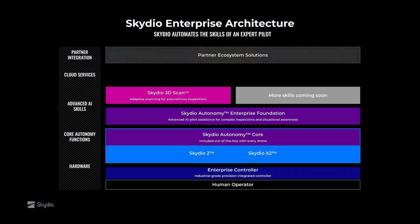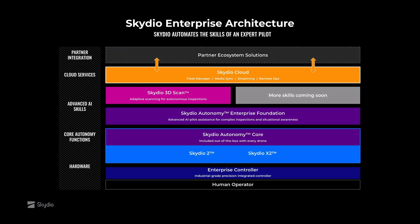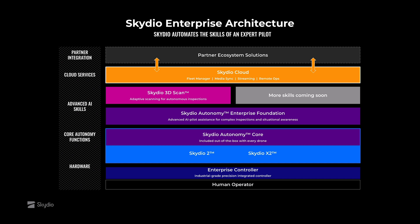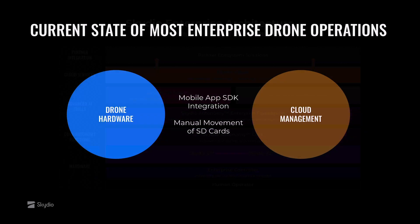Skydio Cloud is the new core component of the Skydio enterprise architecture, which unlocks powerful cloud services for connected flight operations. It's born from an observation that the current state of enterprise drone operations shows a largely divided world, with hardware manufacturers on one side and cloud management providers on the other. We're forced to rely on mobile app integrations or to manually shuttle SD cards around in order to move data from a vehicle to a place where it can be used by your organization at scale.